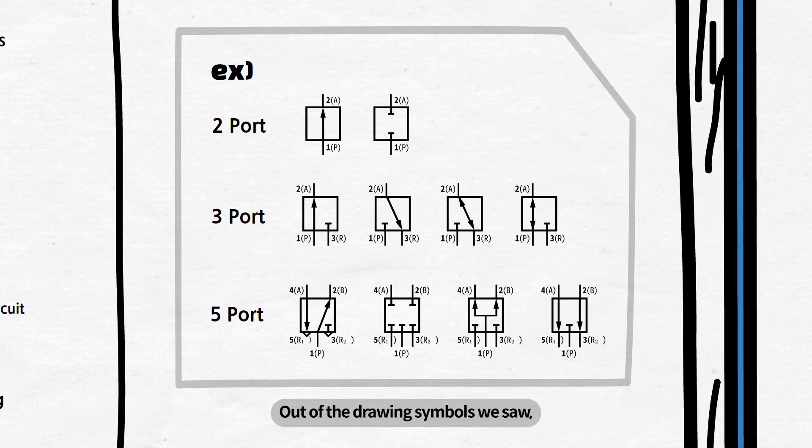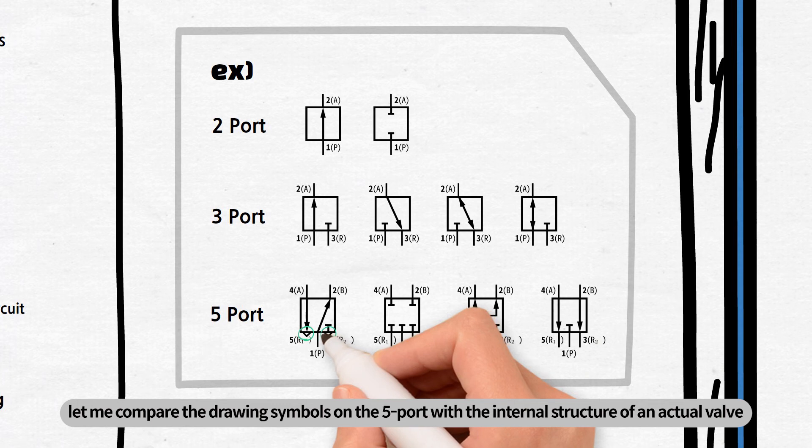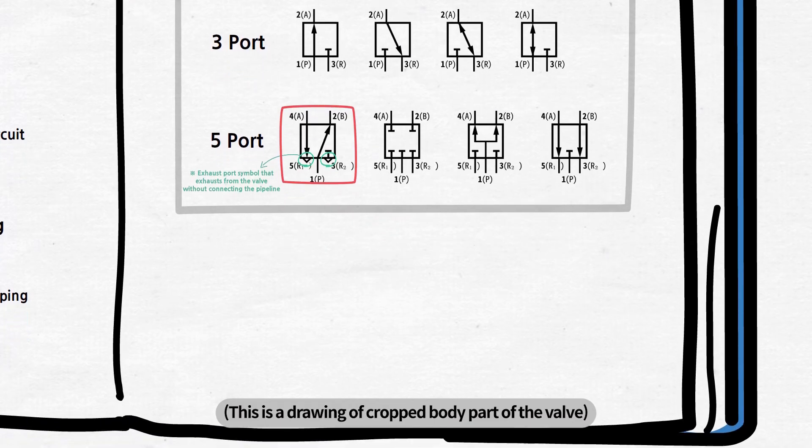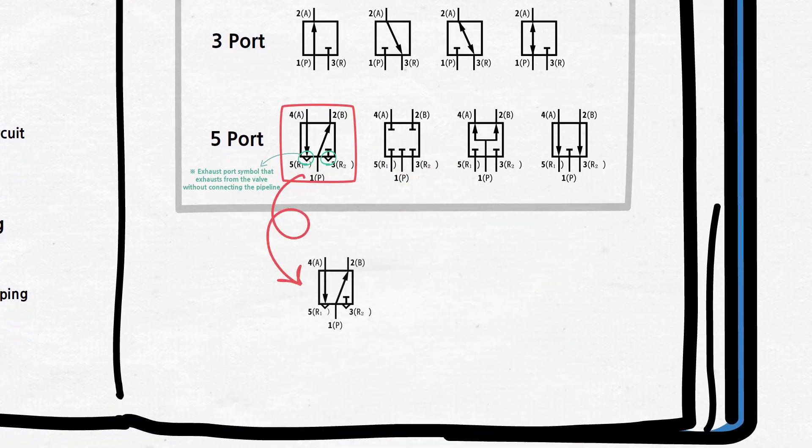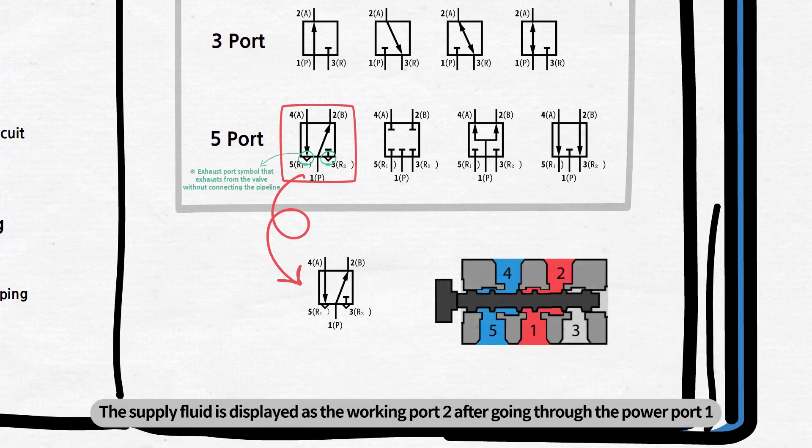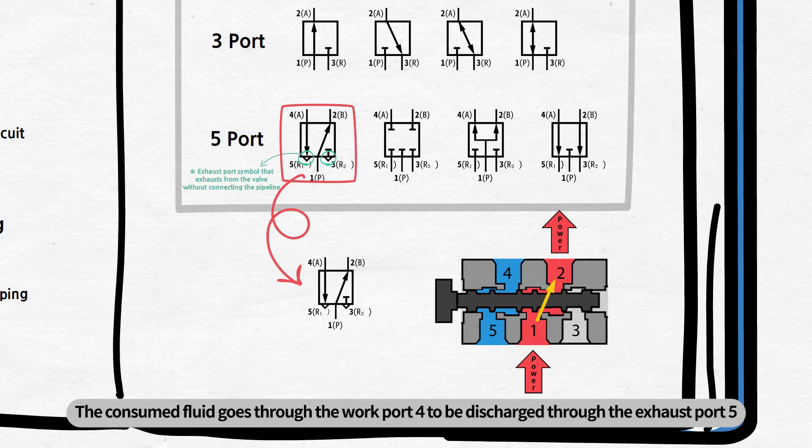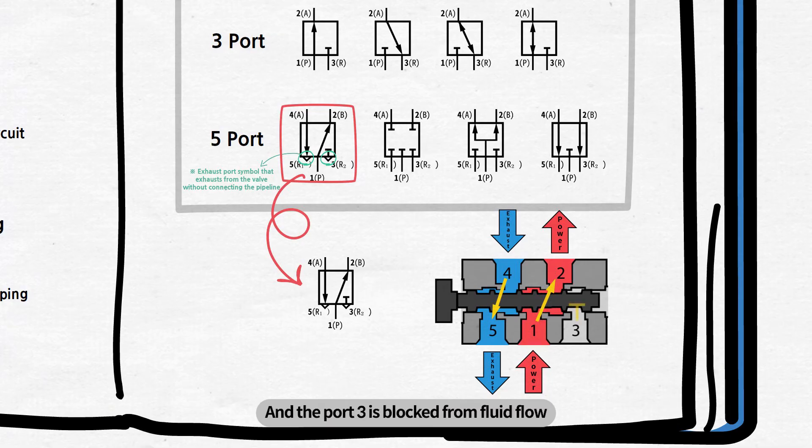Out of the drawing symbols we saw, let me compare the drawing symbols on the 5-port with the internal structure of an actual valve. This is a drawing of a cropped body part of the valve. The supply fluid is displayed as the working port 2 after going through the power port 1. The consumed fluid goes through the work port 4 to be discharged through the exhaust port 5, and the port 3 is blocked from fluid flow.